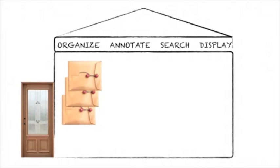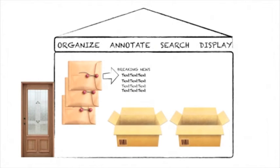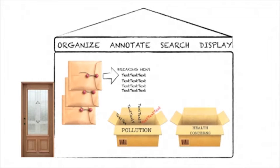The second major function of QDA software is the annotation of your data. There are two general ways of annotating data: one is by reducing data, and one is by expanding data. Reducing data is often called coding, but we can also call it tagging or indexing. You open up one of your imported documents and see your data — for example, a newspaper article. Think of your codes as boxes for specific snippets of data: you'll have one box for pollution and one for health concerns. You can assign snippets of your data to these boxes. In a way, you're creating an index of your data.